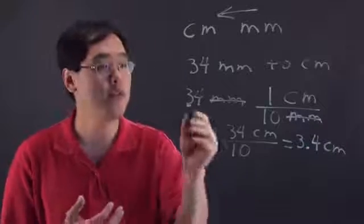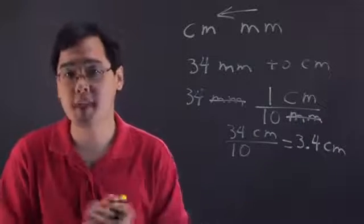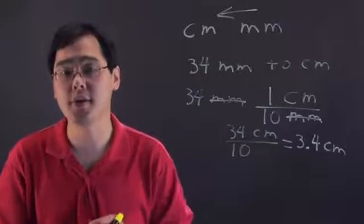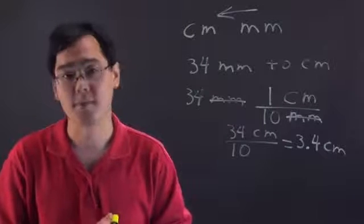At the end of the day, 34 millimeters is 3.4 centimeters and we got that by dividing by 10. The important thing to keep in mind here is when you're converting from millimeters to centimeters, division by 10 will always get you there.